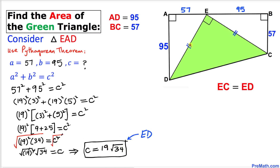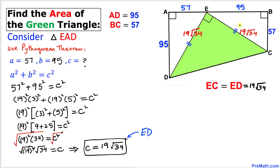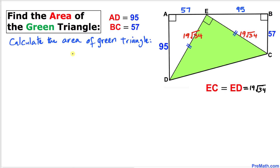Thus this side length ED turns out to be 19 times the square root of 34. Therefore this other side EC also turns out to be 19 times the square root of 34, since these two sides are equal.